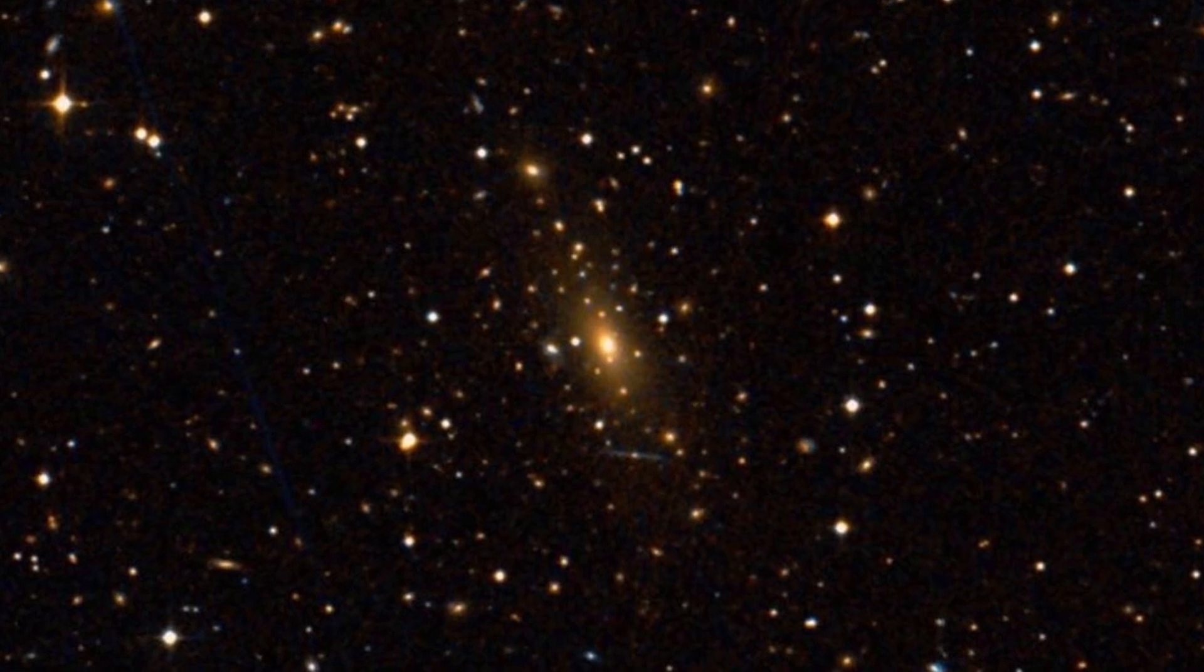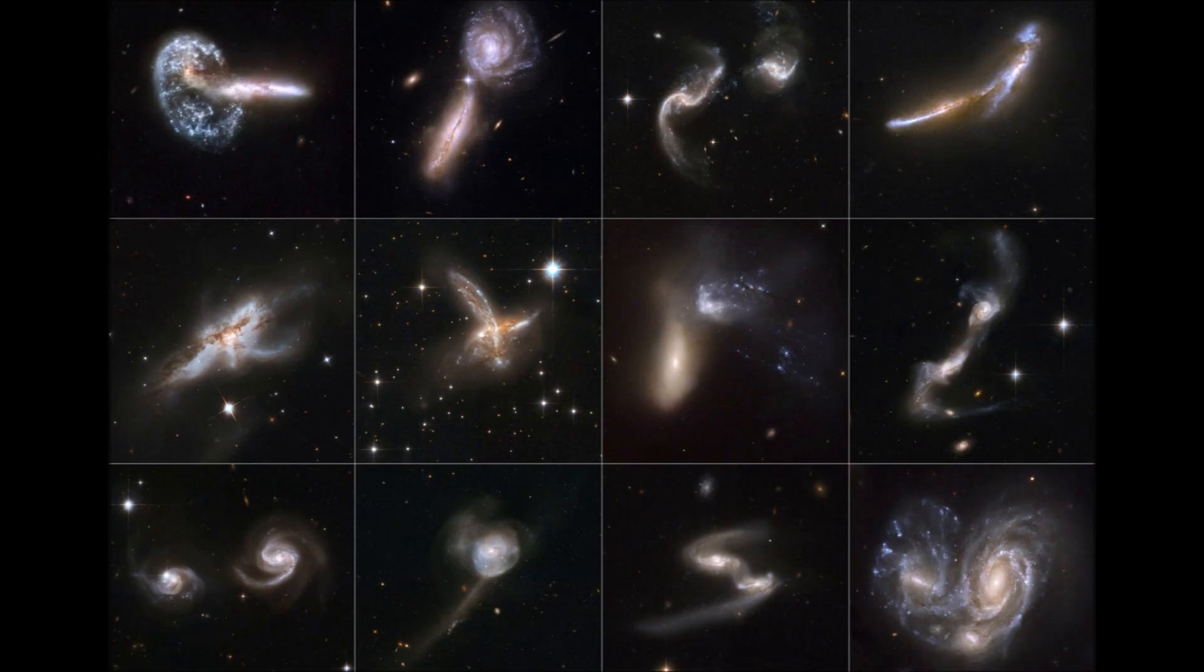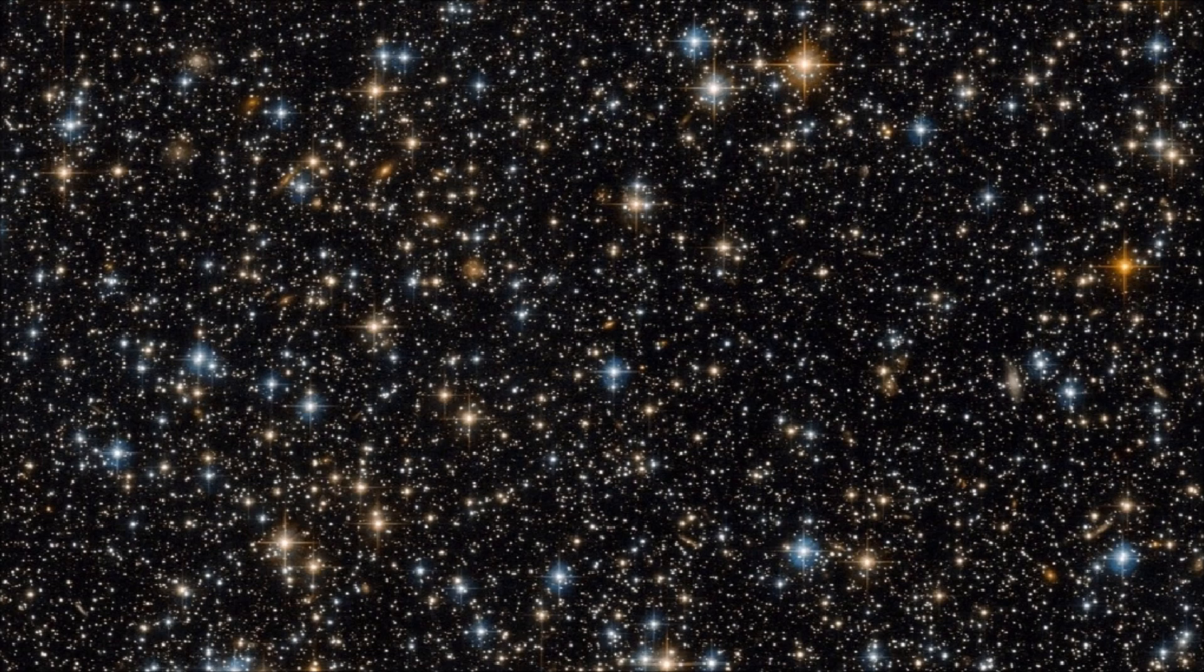This massive galaxy was likely formed from the merging of several smaller galaxies over time. Over billions of years, this galaxy has constantly collided with other nearby galaxies, eventually coalescing into IC 1101. The galaxy was probably located in a very dense portion of space with tons of other galaxies around it, making it easy to achieve such a large size.